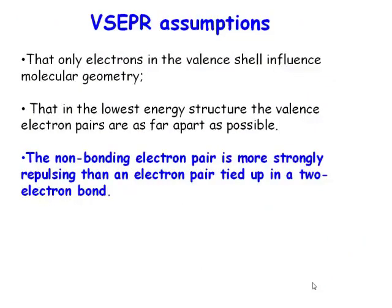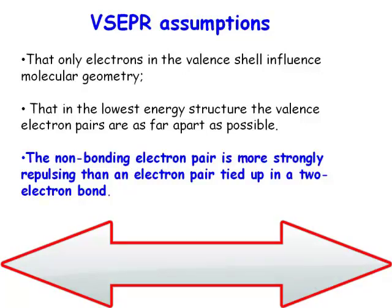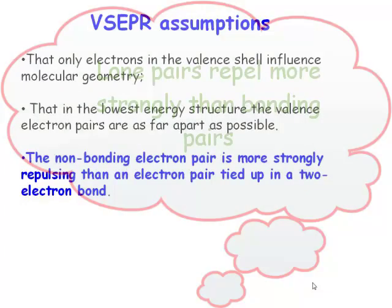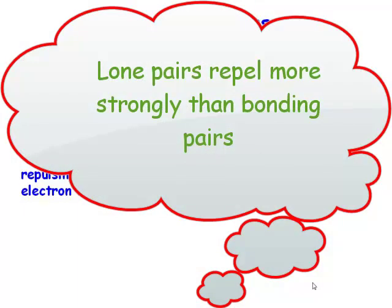The only electrons in the valence shell influence molecular geometry. And in the lowest energy configuration, these groups are as far apart as possible. Non-bonding pairs of electrons, lone pairs, because they're closer to the central atom, actually repel more strongly than bonding pairs.